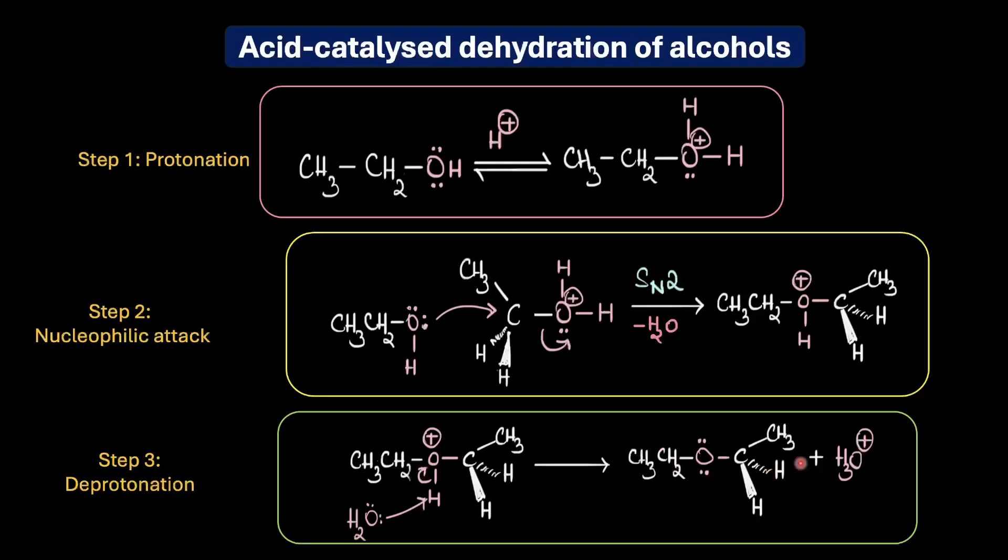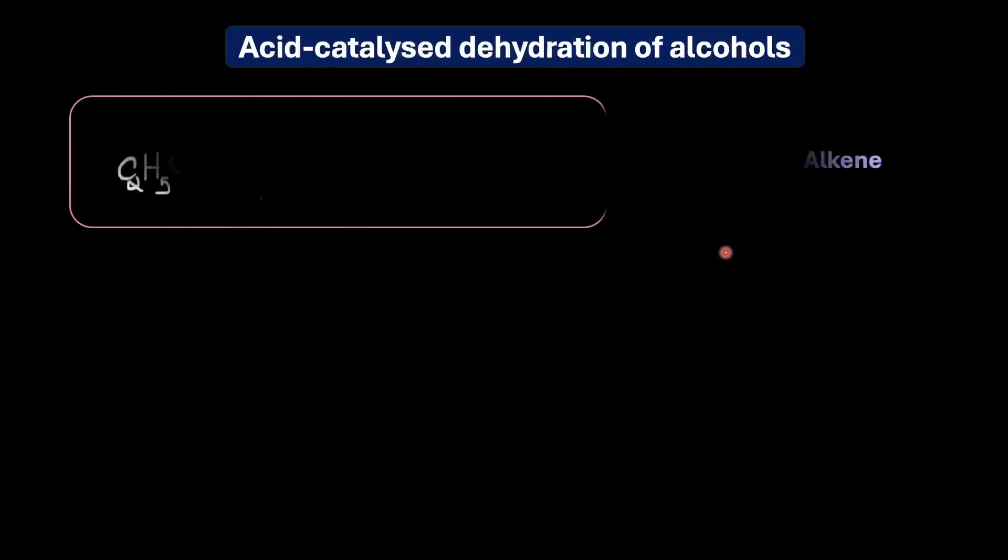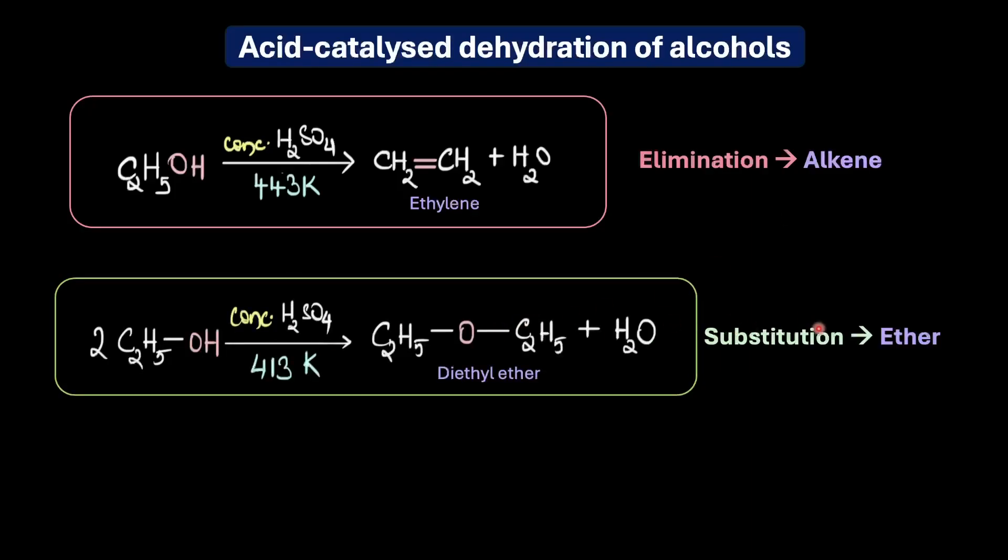But the most important thing is that the dehydration of alcohol to form alkenes or ethers takes place under acidic conditions. So you can see that because both of these reactions are occurring under acid dehydration conditions, both these mechanisms kind of compete with each other. Yes, the elimination to give an alkene competes with the substitution to form an ether.